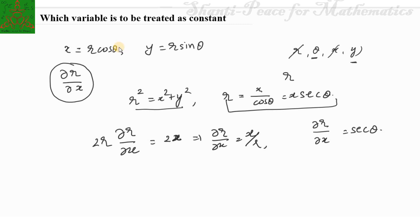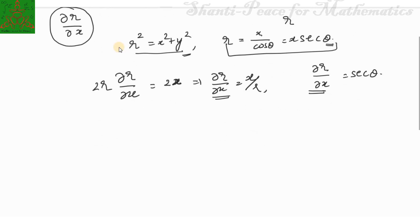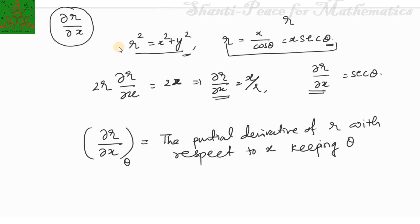In the first case we are taking y as the constant variable, and in the second we have taken θ as the constant variable. To avoid this confusion about which variable is regarded as constant, we introduce the following notation: (∂r/∂x)_θ, where θ written outside the bracket means the partial derivative of r with respect to x keeping θ constant. Here r must be expressed as a function of x and θ.